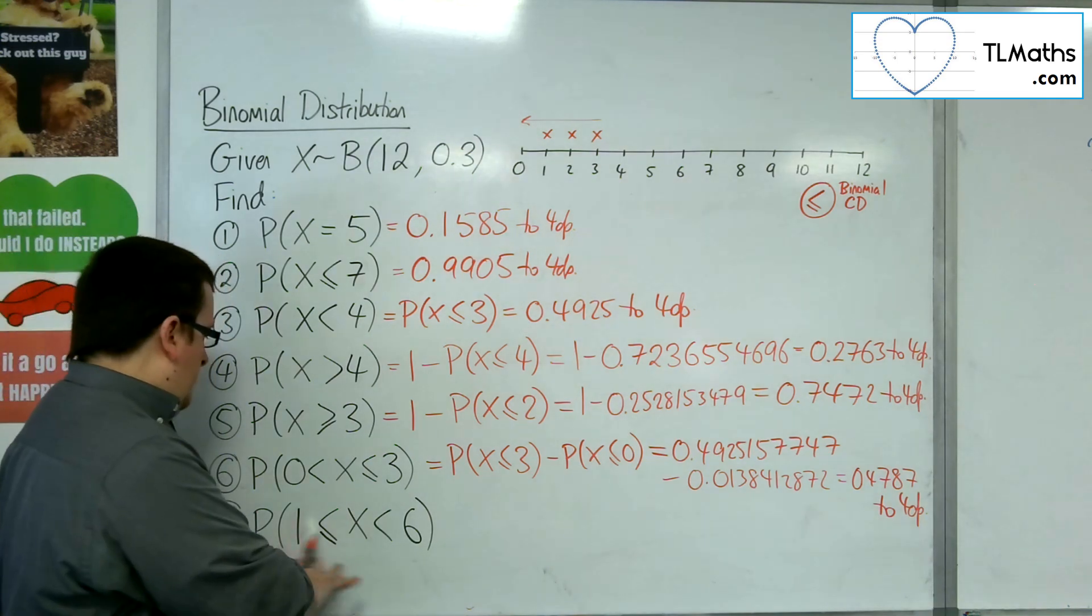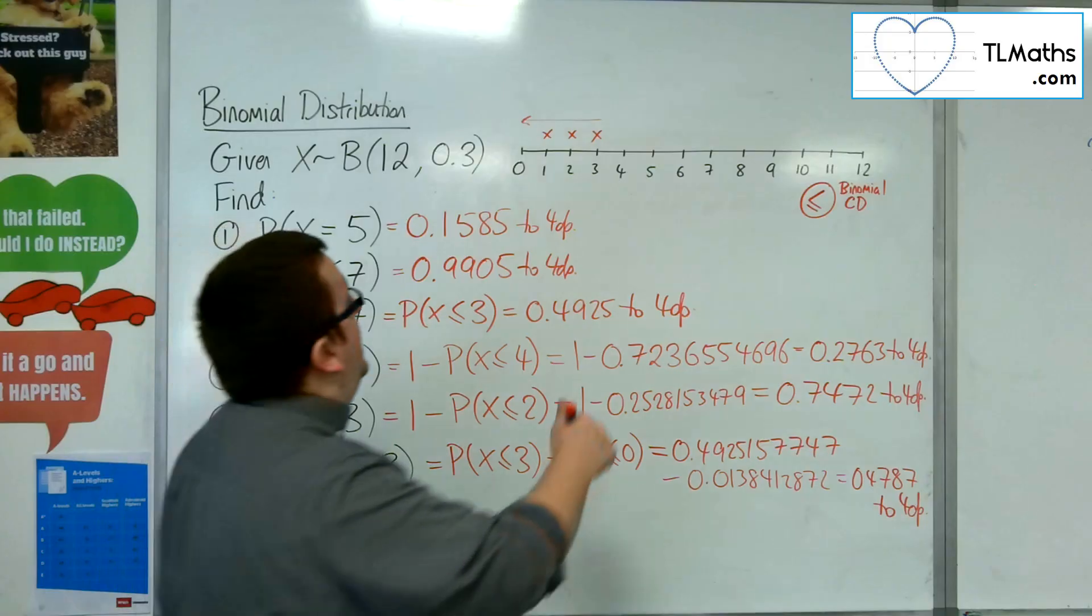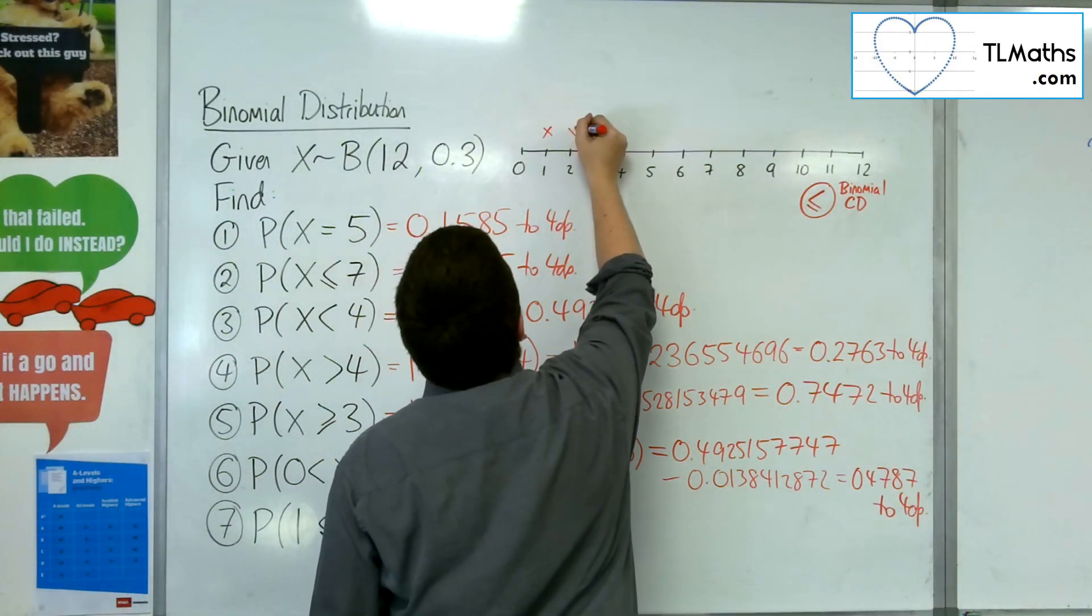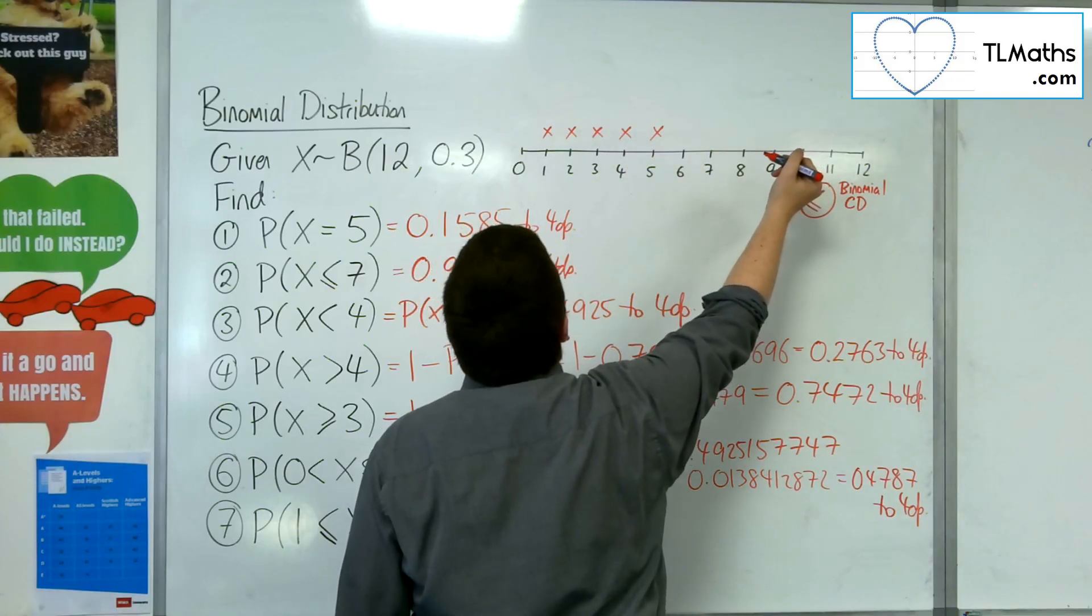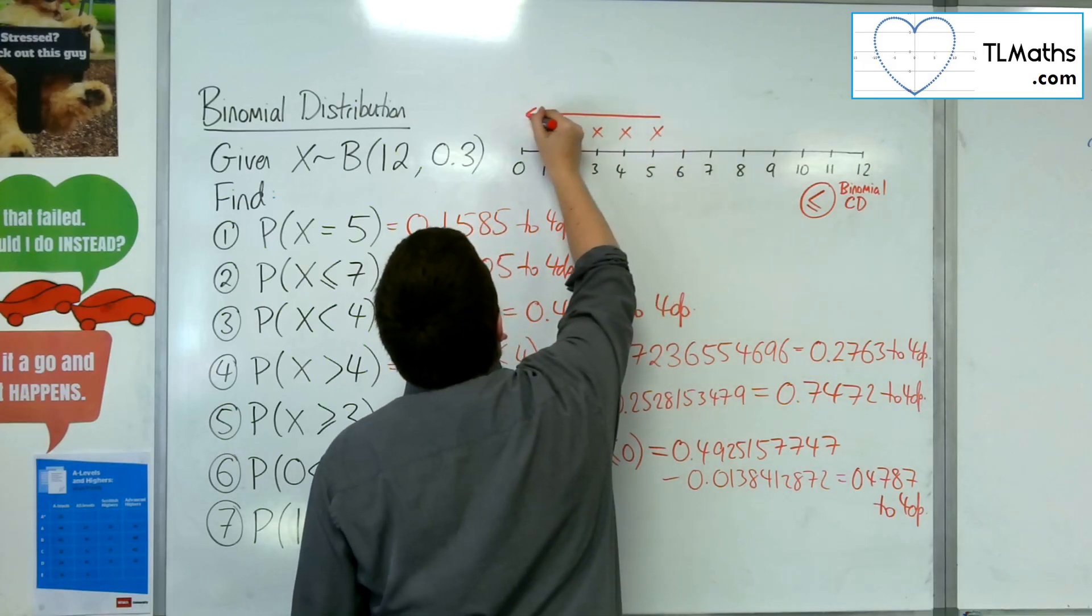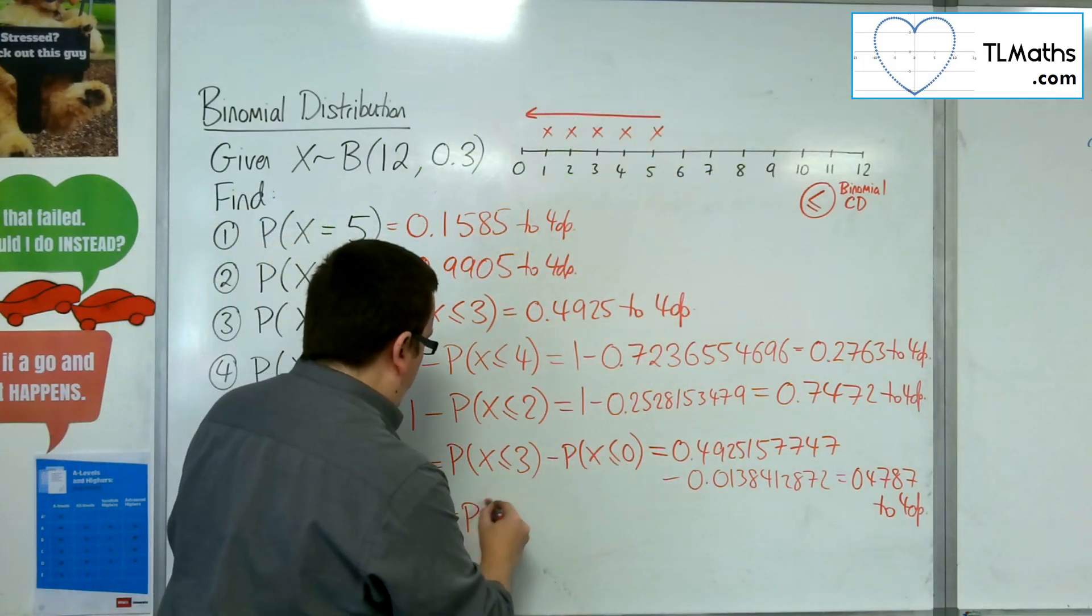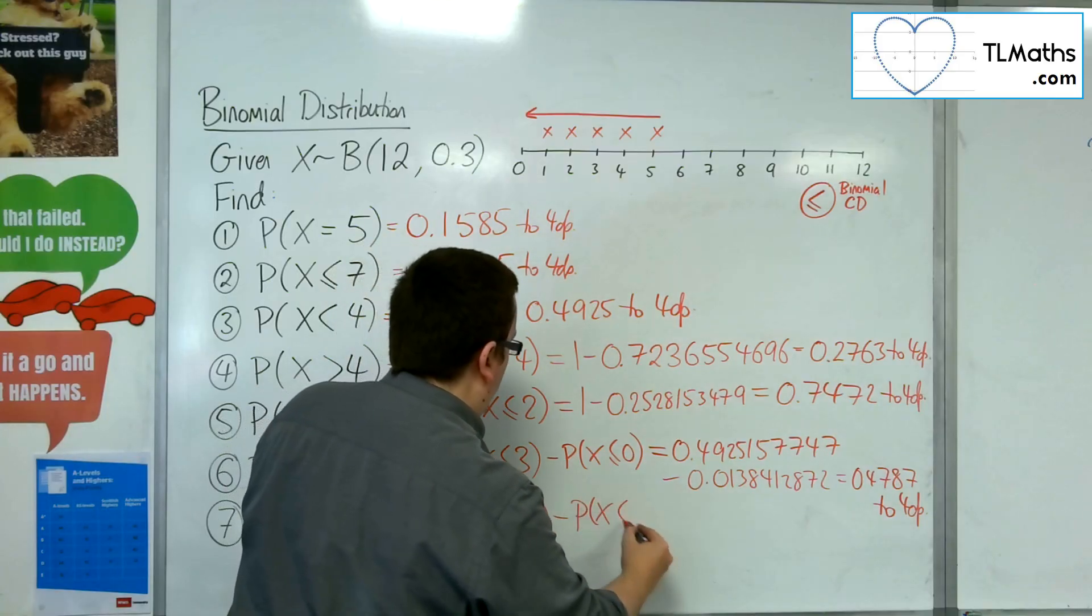Last one, then. Now, x here is going to be greater than or equal to 1, but less than 6. So, greater than or equal to 1, but less than 6. So, they're those five. So, I want to find the probability of x being less than or equal to 5, and take away the probability of x being less than or equal to 0 again.